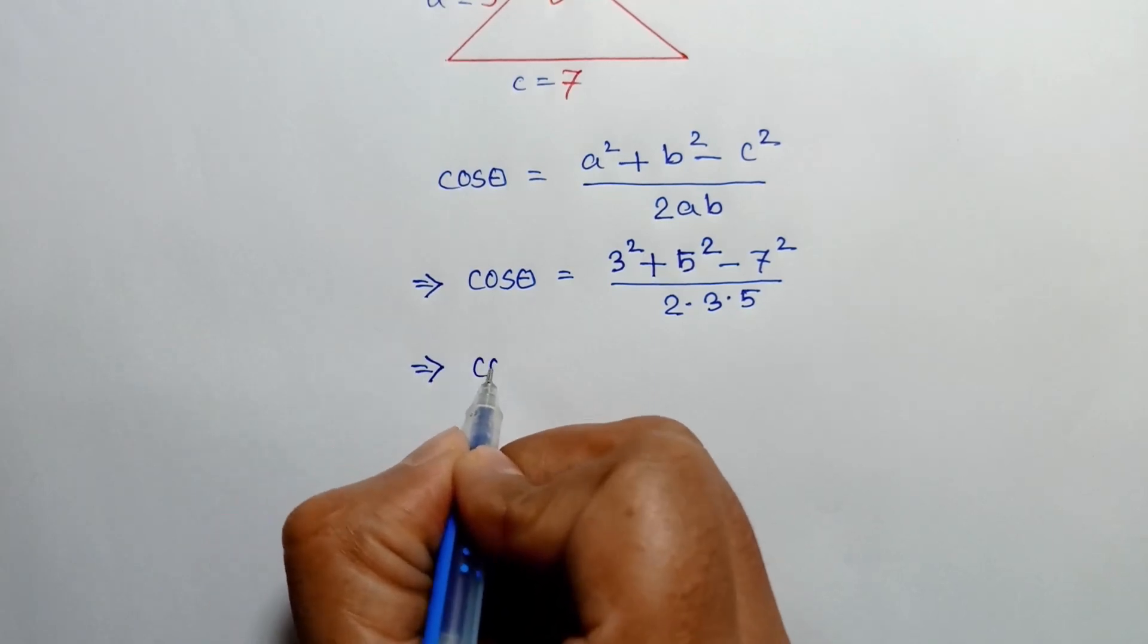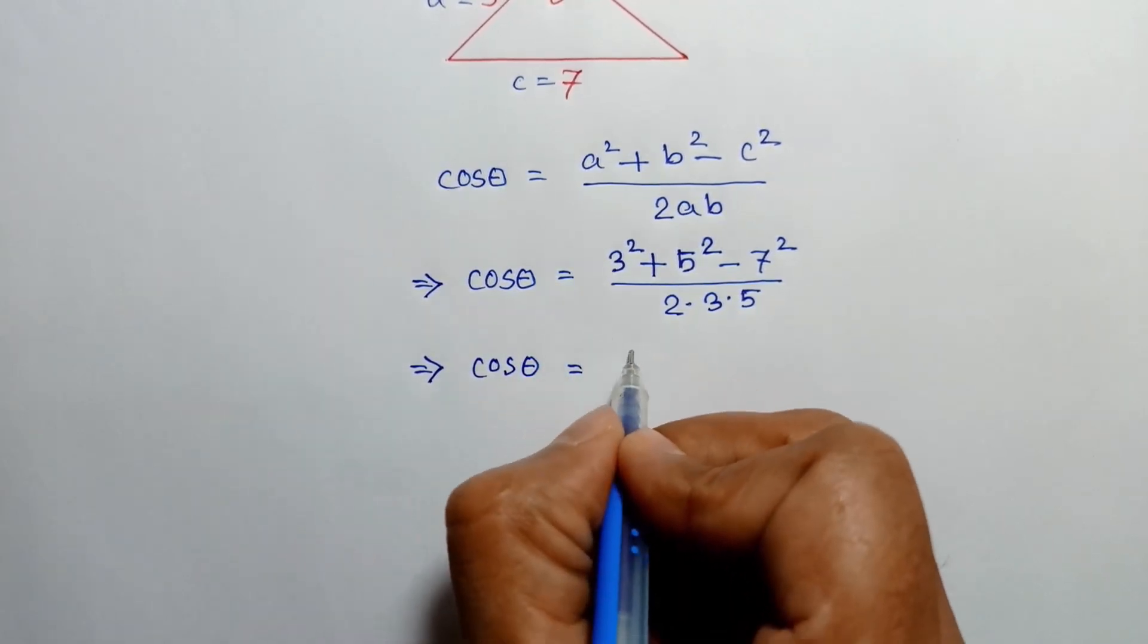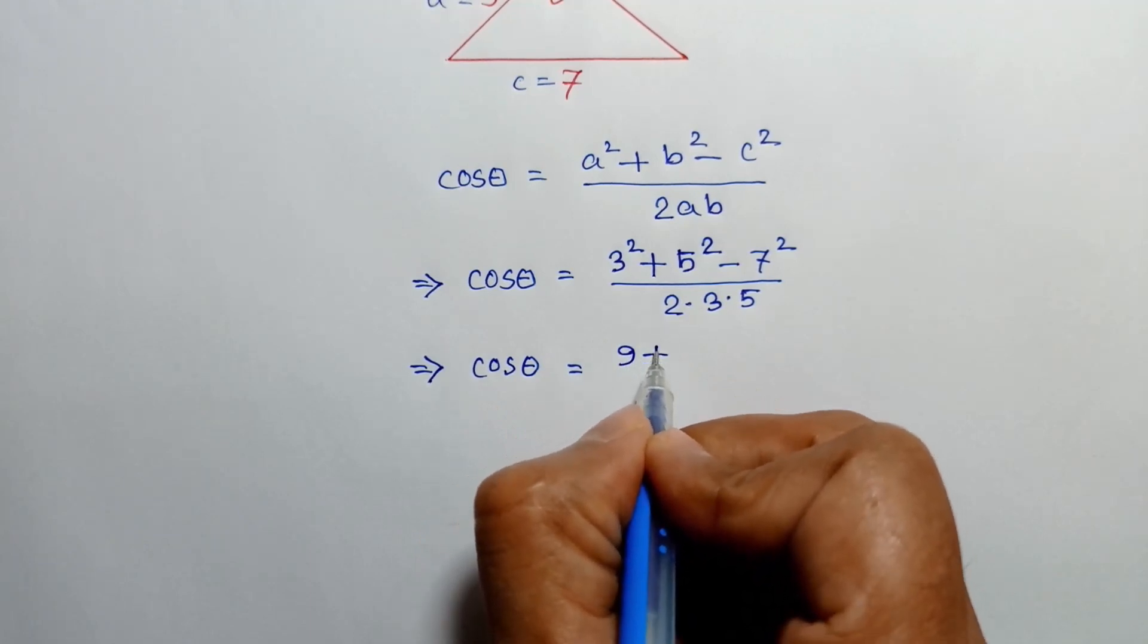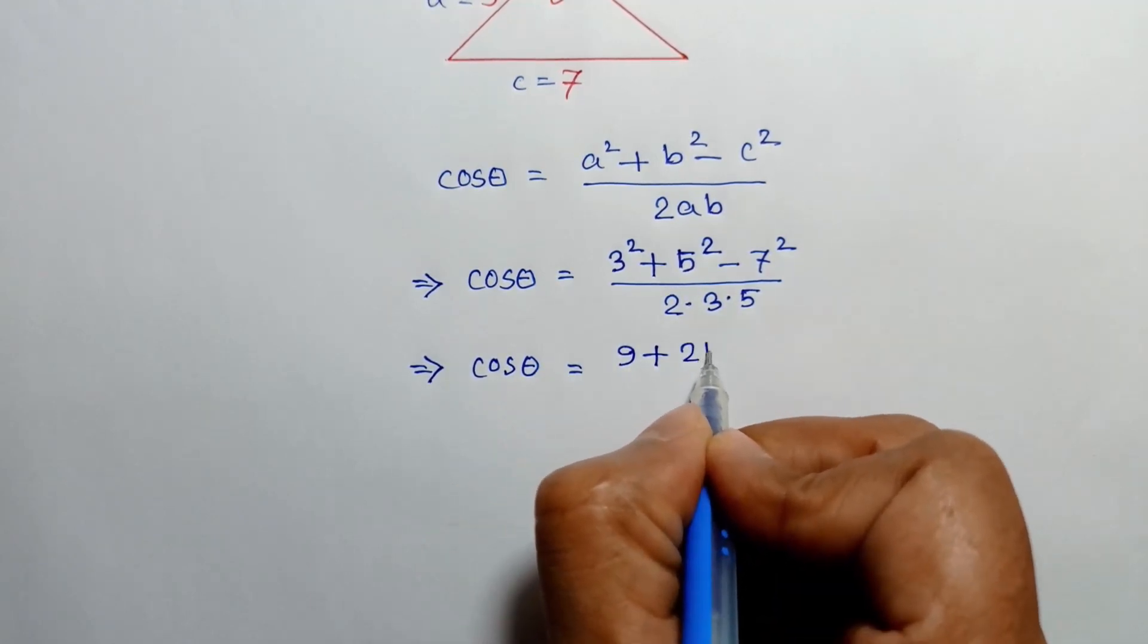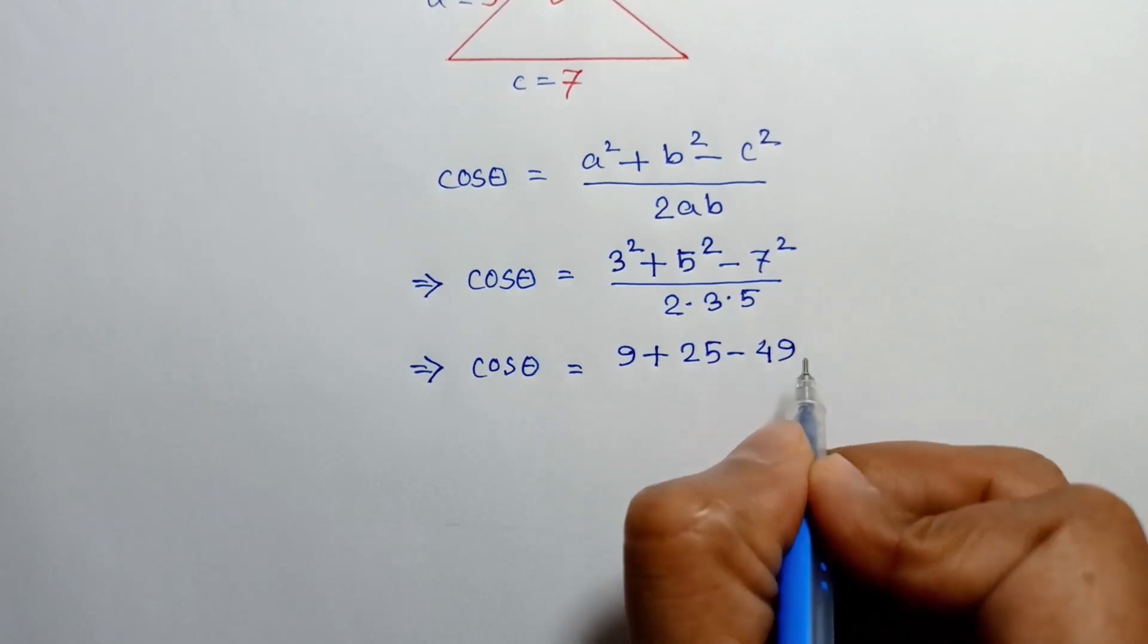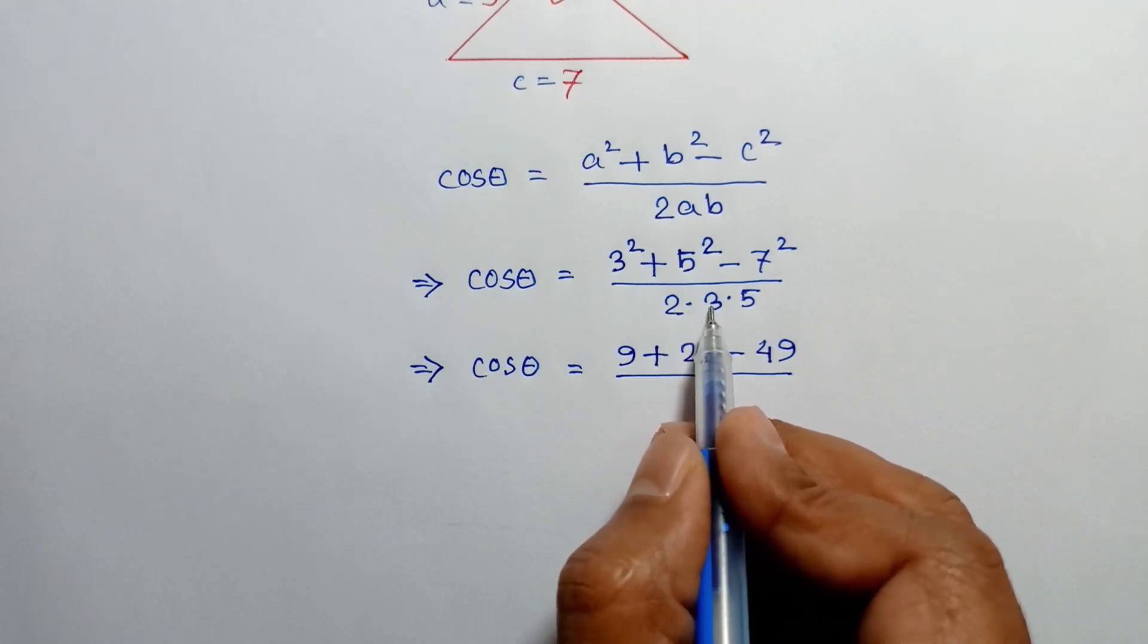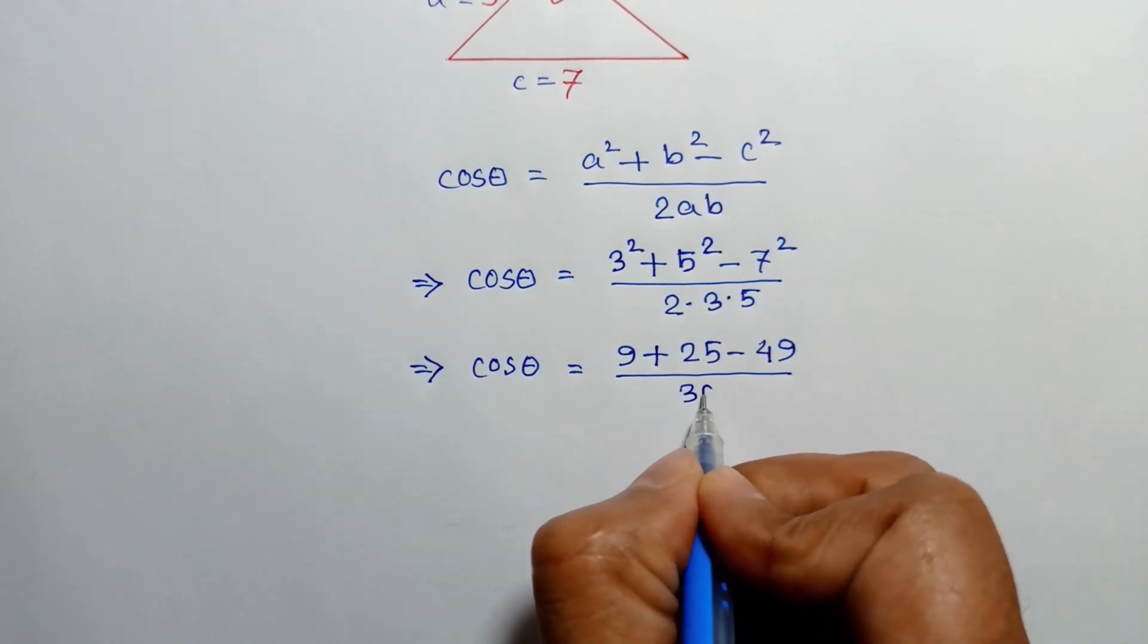Or cos theta is equal to 3 square is 9 plus 5 square is 25 minus 7 square is 49 over 2 times 3 is 6 times 5 is 30.